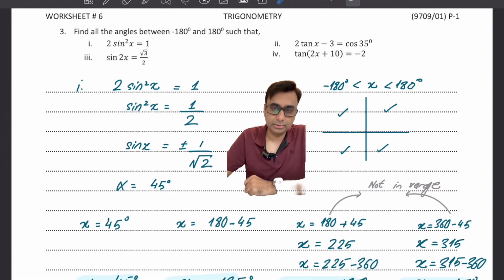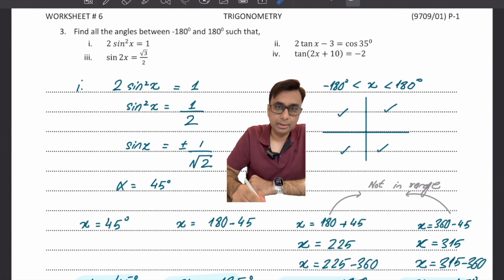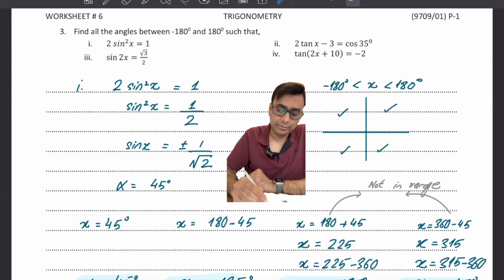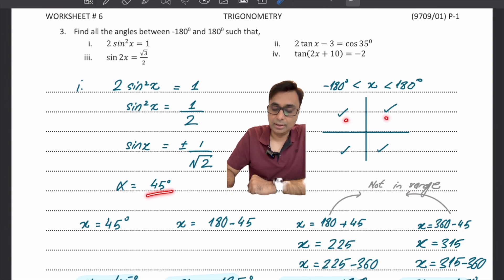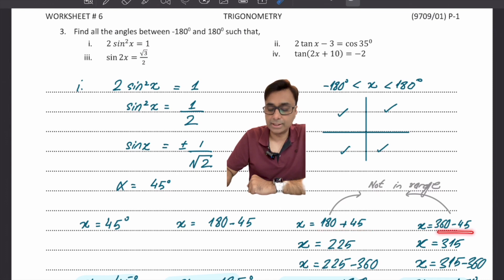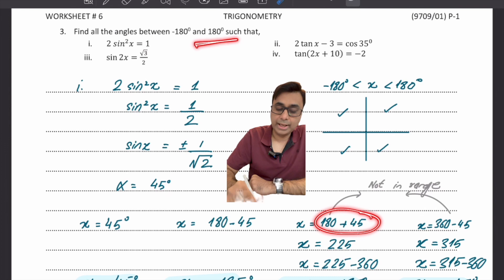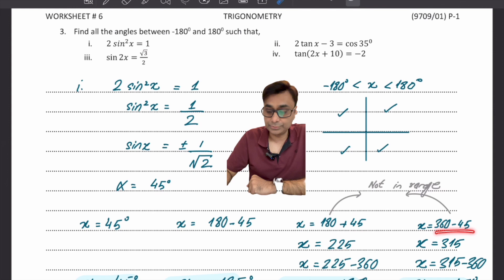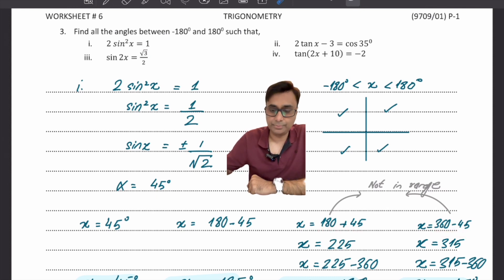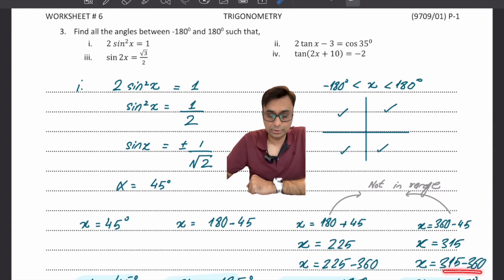If the range is minus 180 to 180 instead of 0 to 360, adjust accordingly. For an equation giving sin x equals plus or minus 1 over root 2, the basic angle is 45°. The standard answers are 45°, 135°, 225°, and 315°. However, 225° and 315° exceed 180° and are outside the interval. Subtract 360 from each: minus 135° and minus 45° are both within minus 180 to 180. So the four acceptable answers are 45°, 135°, minus 135°, and minus 45°.